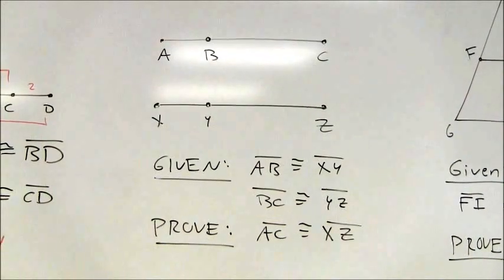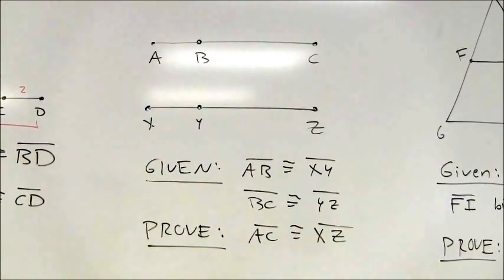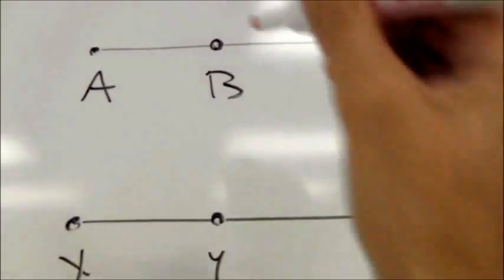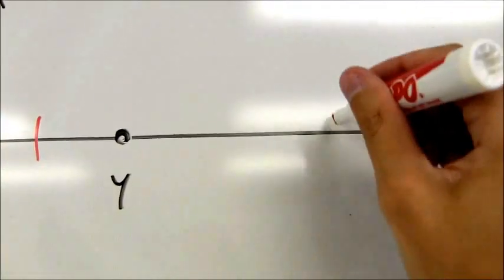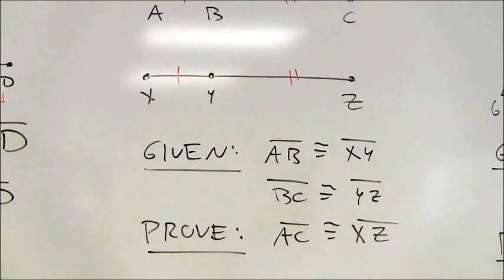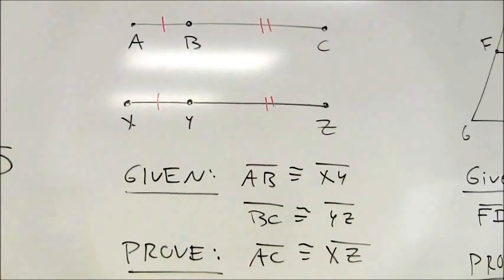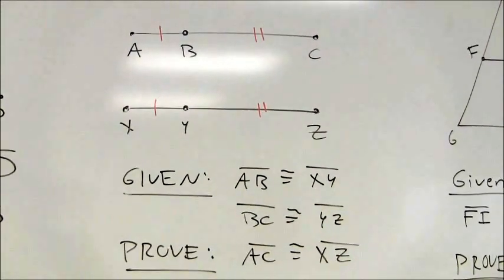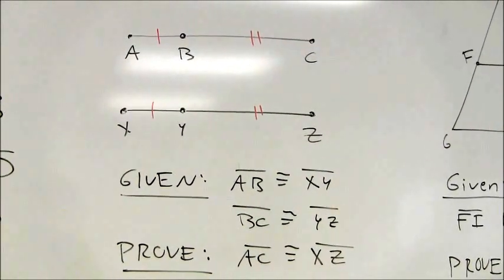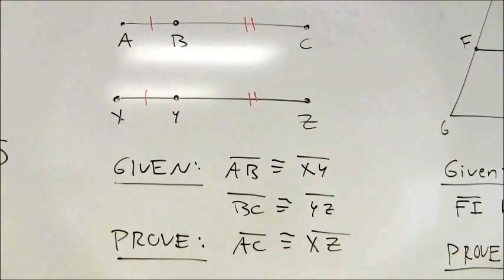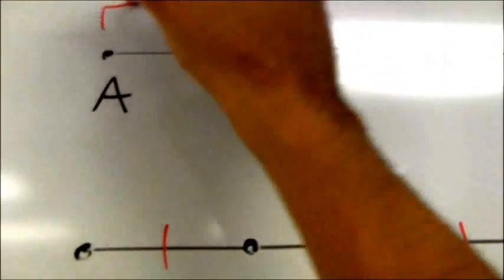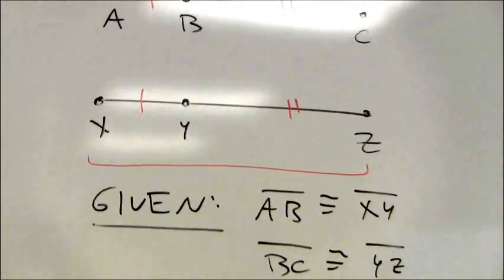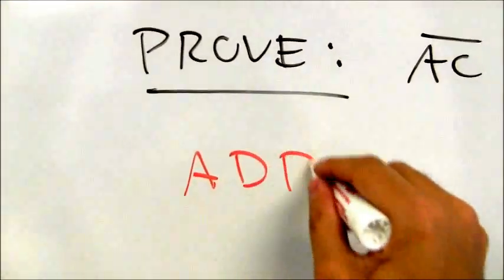In the third example, I'm told that the two left-hand side segments, AB and XY, are congruent to each other. I'm told that the two right-hand side segments, BC and YZ, are also congruent. I'll mark those congruent to each other. Notice that I'm being asked to show that the total segments are congruent to each other. What do I do with AB, XY, BC, and YZ to get the whole segments? I'm going to add those equal segments to those equal segments. If I add the same thing to two values that are equal, I end up getting two new sums that are equal. This is an example of the addition property.